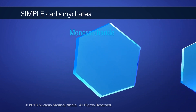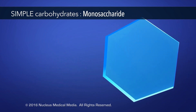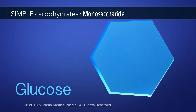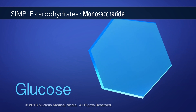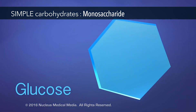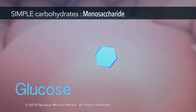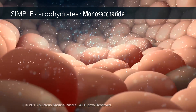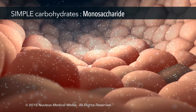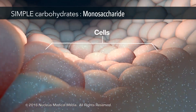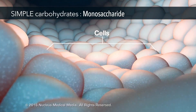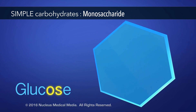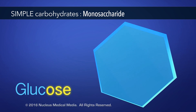An example of a monosaccharide is the sugar glucose. It's a monosaccharide because it's made of a single sugar molecule. Simple sugars like glucose are the quickest form of energy because your cells can break them down easily. Words ending in -ose or -os are typically sugars.